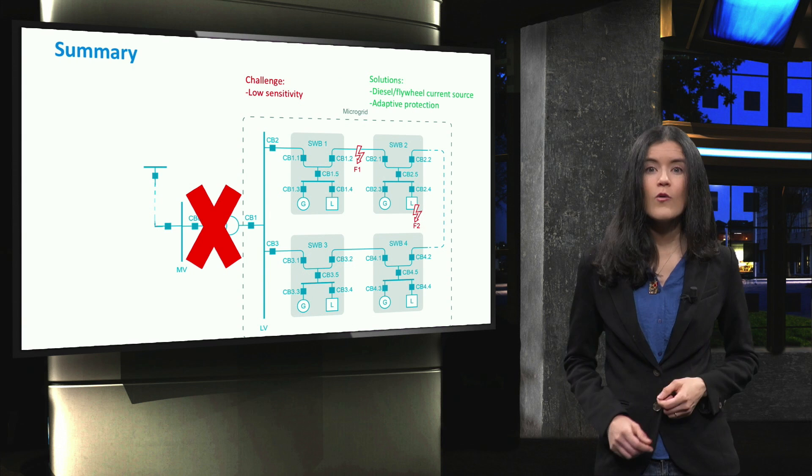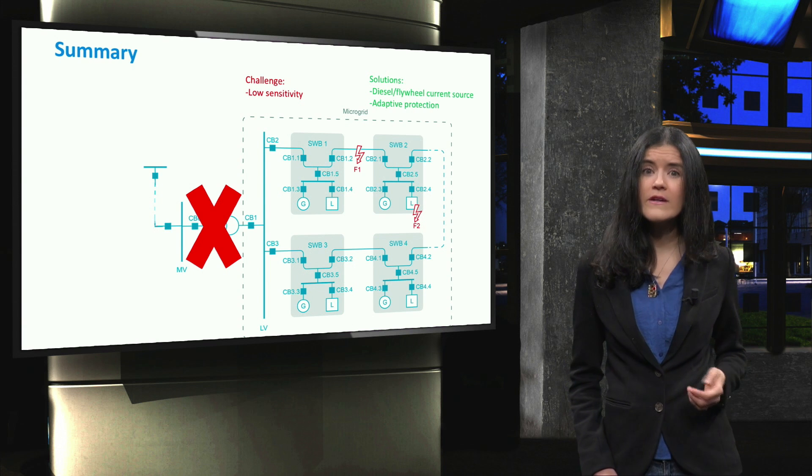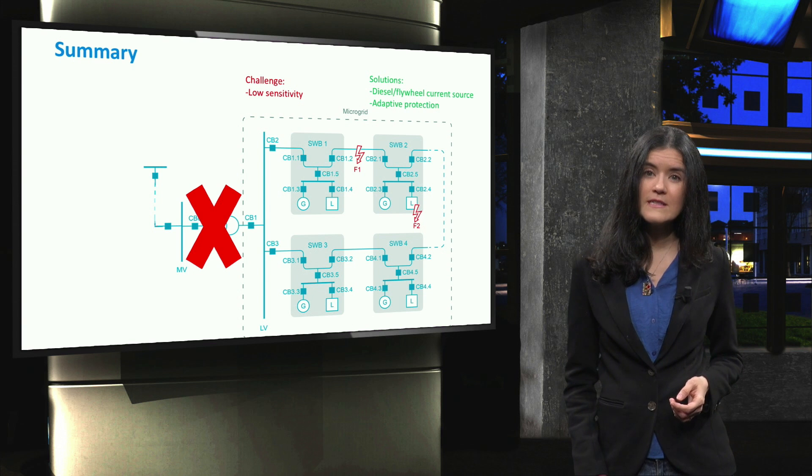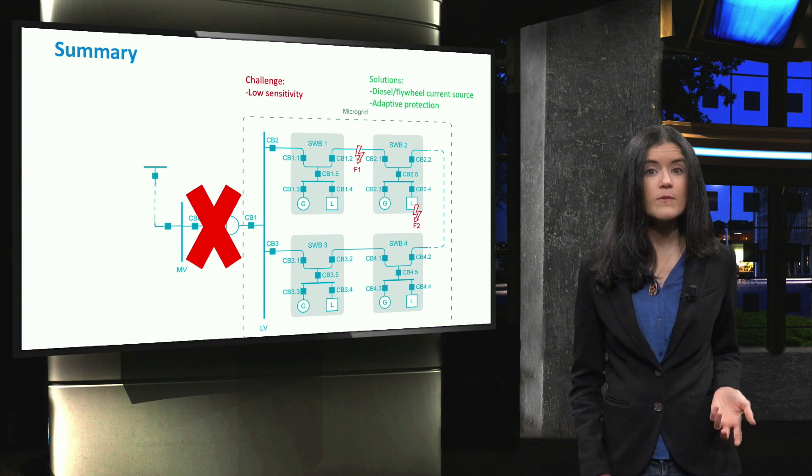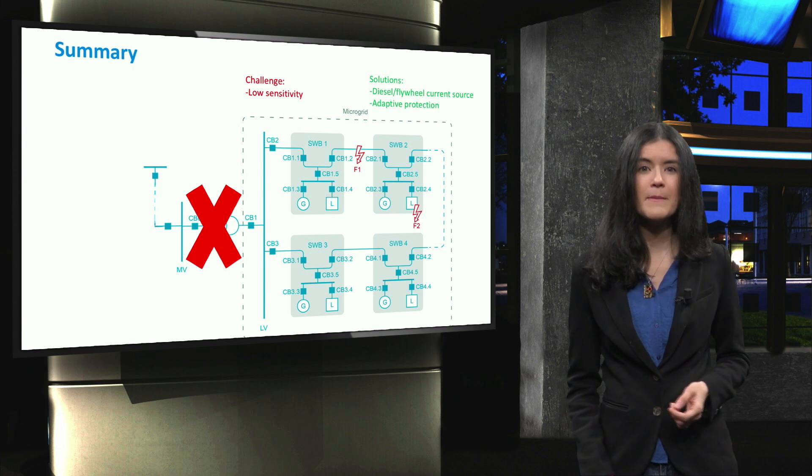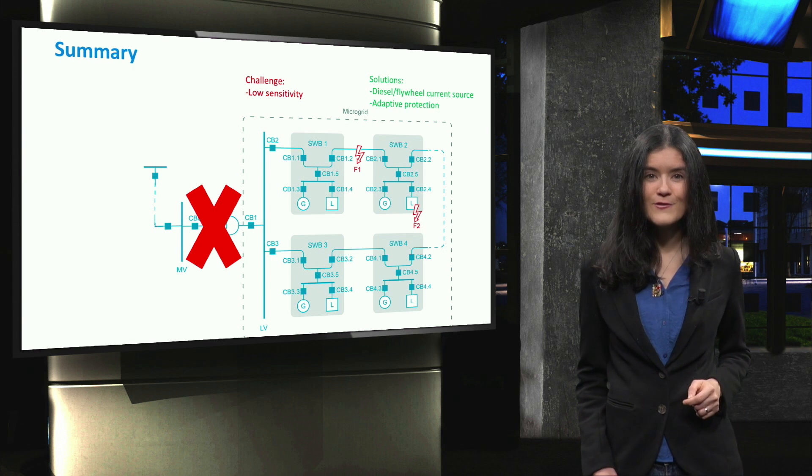In summary, we have seen in this video how microgrid protection works in islanded mode. To tackle the low sensitivity challenge faced by the conventional protection schemes, an adaptive protection scheme is sometimes implemented, as we will see in the next video.